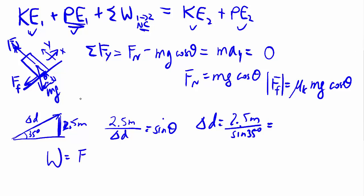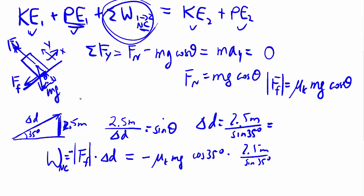Which brings us to work. The only non-conservative work we have is the friction multiplied by my delta d. Of course, we have a negative sign here because the friction always takes energy away from us. In the sense that it's always opposite to whatever our velocity happens to be, in which case it's also the direction of the displacement, we have negative mu k mg cosine 35 multiplied by 2.5 meter sine 35 degrees.